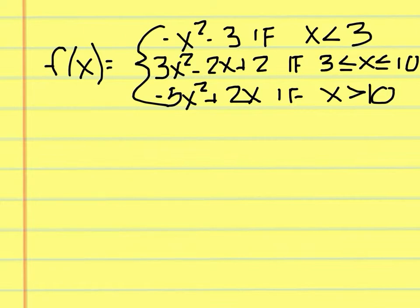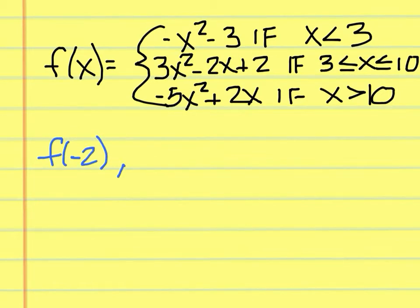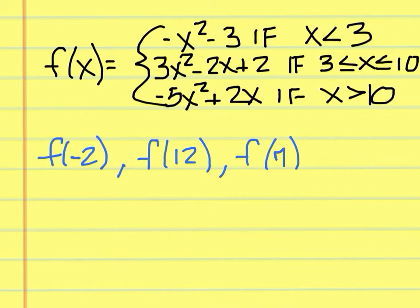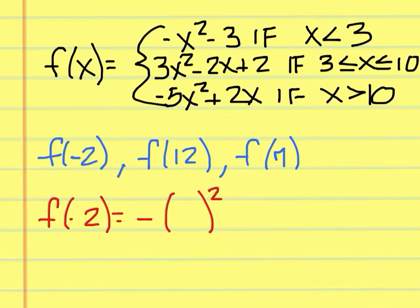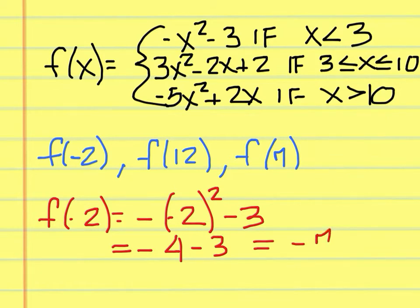The problems we want to evaluate are f of negative 2, f of 12, and f of 7. We'll start with f of negative 2. We use the first function because negative 2 is less than 3. So f of negative 2 is negative quantity of negative 2 squared minus 3, that's negative 4 minus 3, which is negative 7.